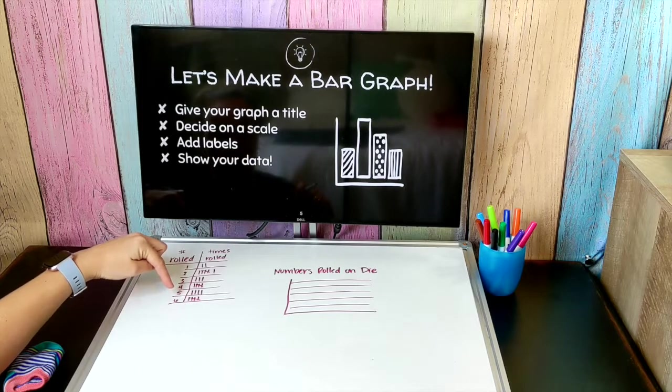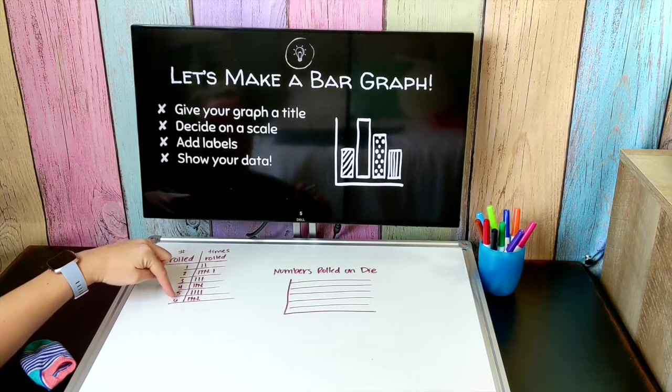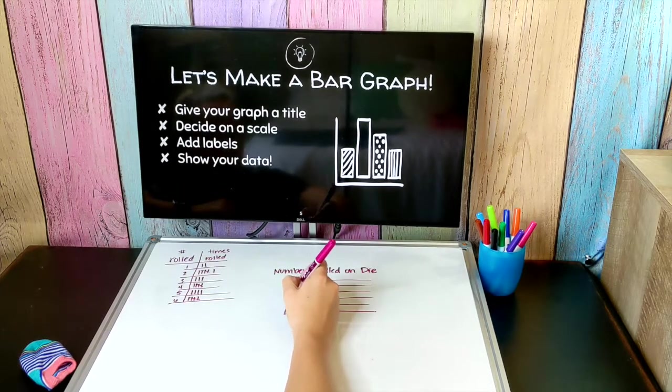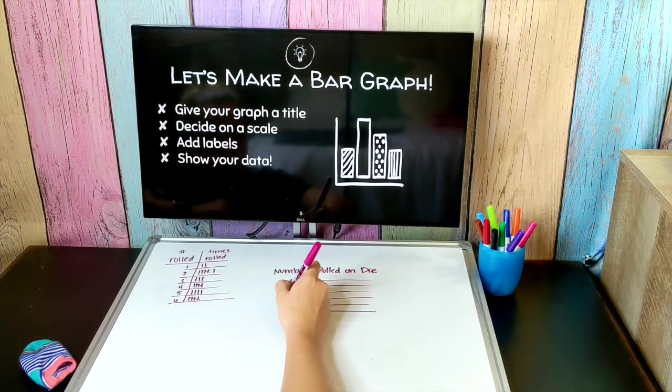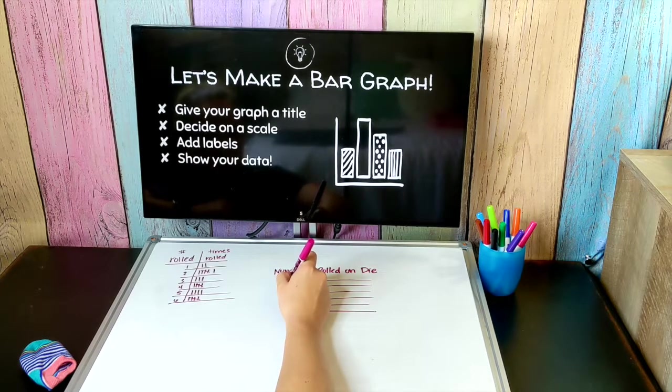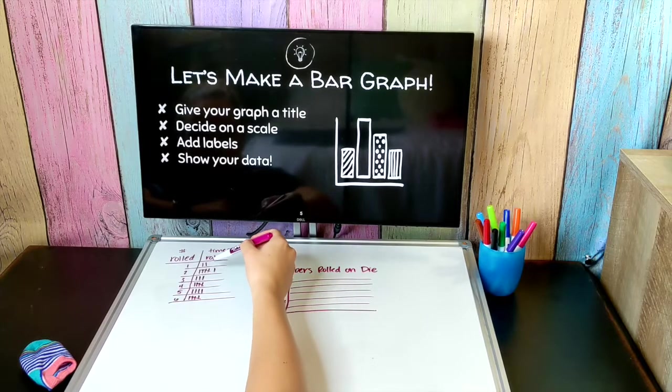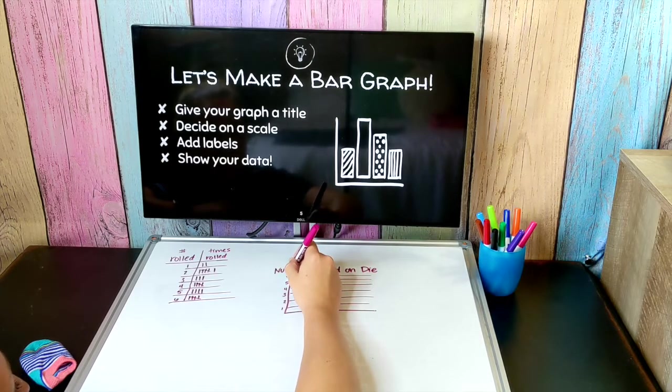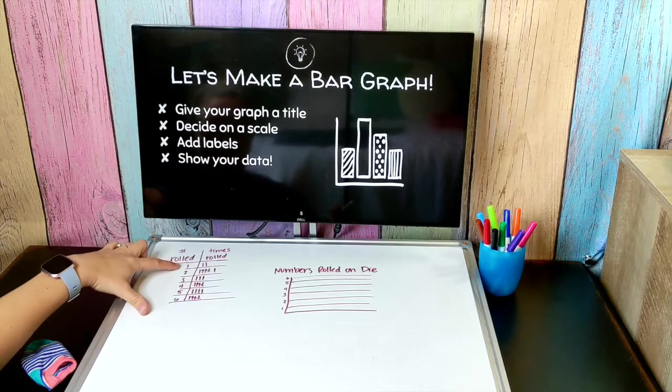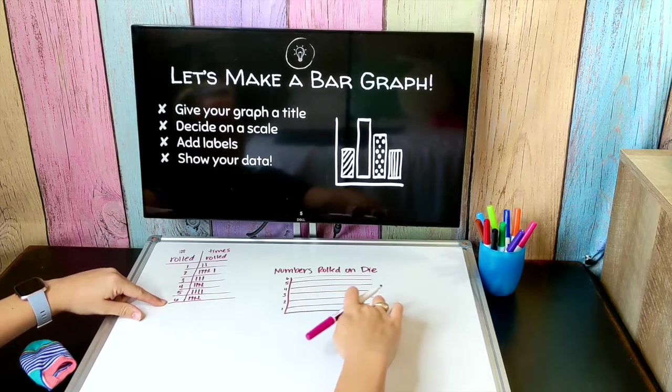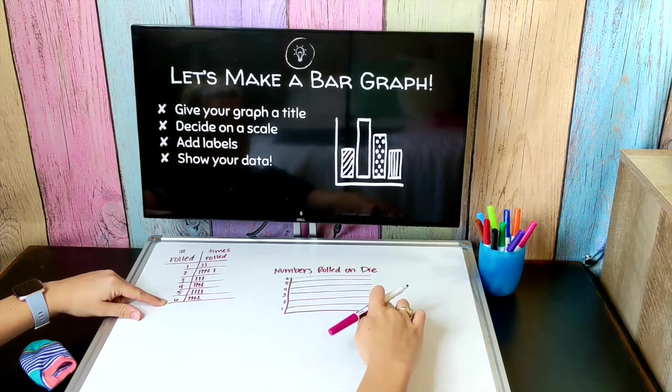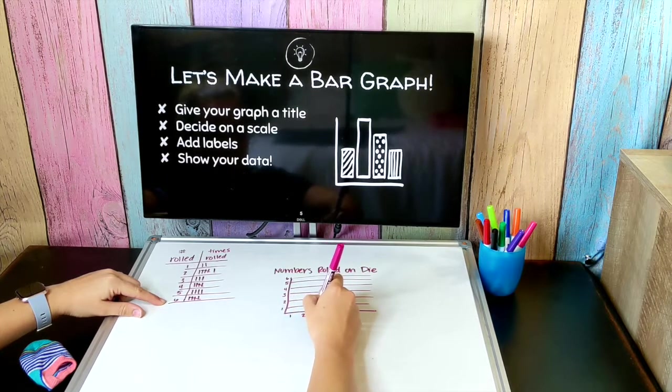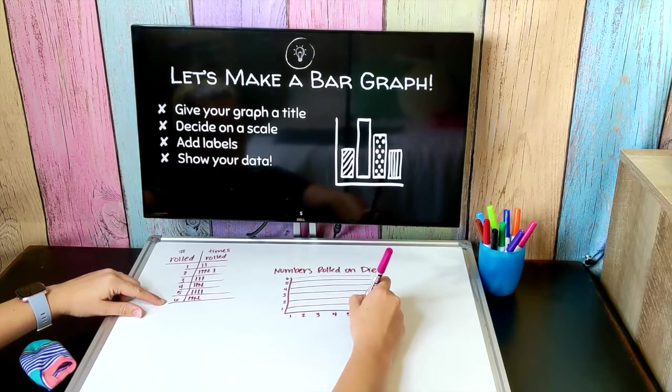Looking at our data there's really not a whole lot of data points for each one, so I could probably count by ones on my scale. Let's start by counting by ones and see how that turns out. One, two, three, four, five. It looks like my greatest value is six so I just need one more line up here to be six. Now I need to add my labels for the bottom. I need space for each bar for each of these data points, so I could have rolled a one, two, three, four, five, or six.